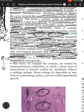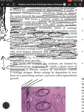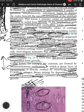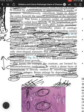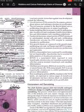Flat bones such as the cranium are formed by intramembranous ossification, in which a dense layer of mesenchyme is directly ossified by osteoblasts without a cartilage anlagen. Bones enlarge by deposition of new bone on a pre-existing surface — a process called appositional growth.